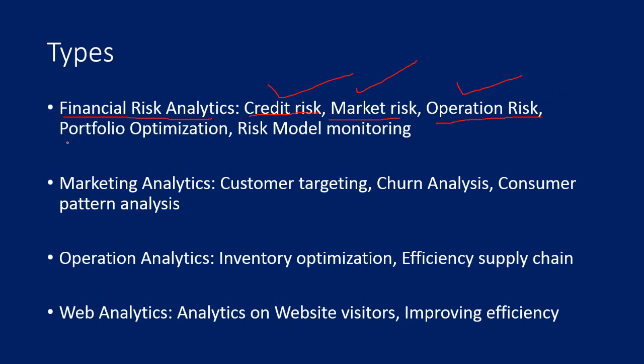Another area is portfolio optimization. Every bank wants to optimize the return it gets from different types of portfolios — a group of customers based on product, demography, or other criteria. The bank decides how much interest rate to charge, what should be the tenure of the loan, who should receive money, and what actions to take if somebody fails to make the payment. These decisions come under portfolio optimization.